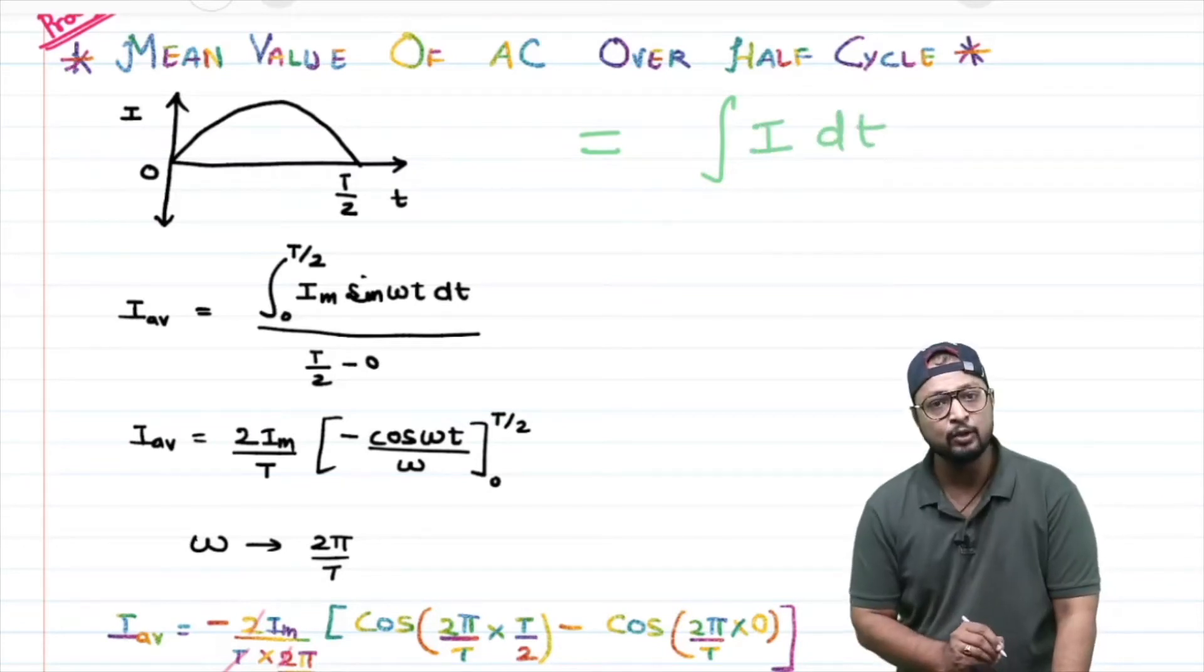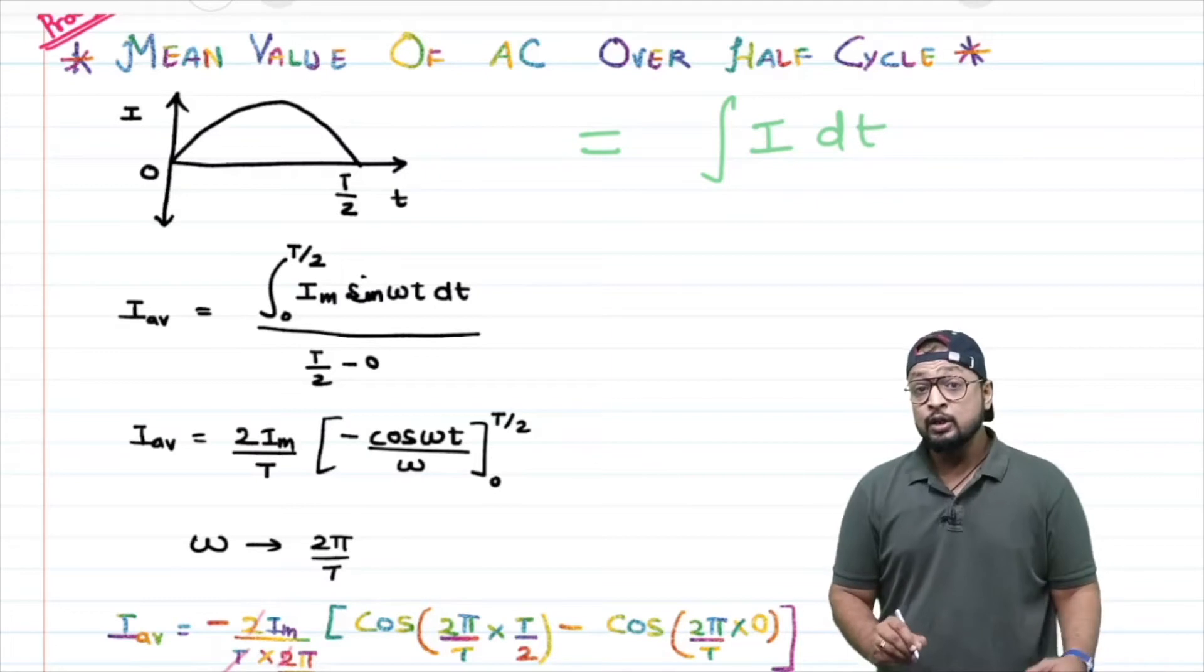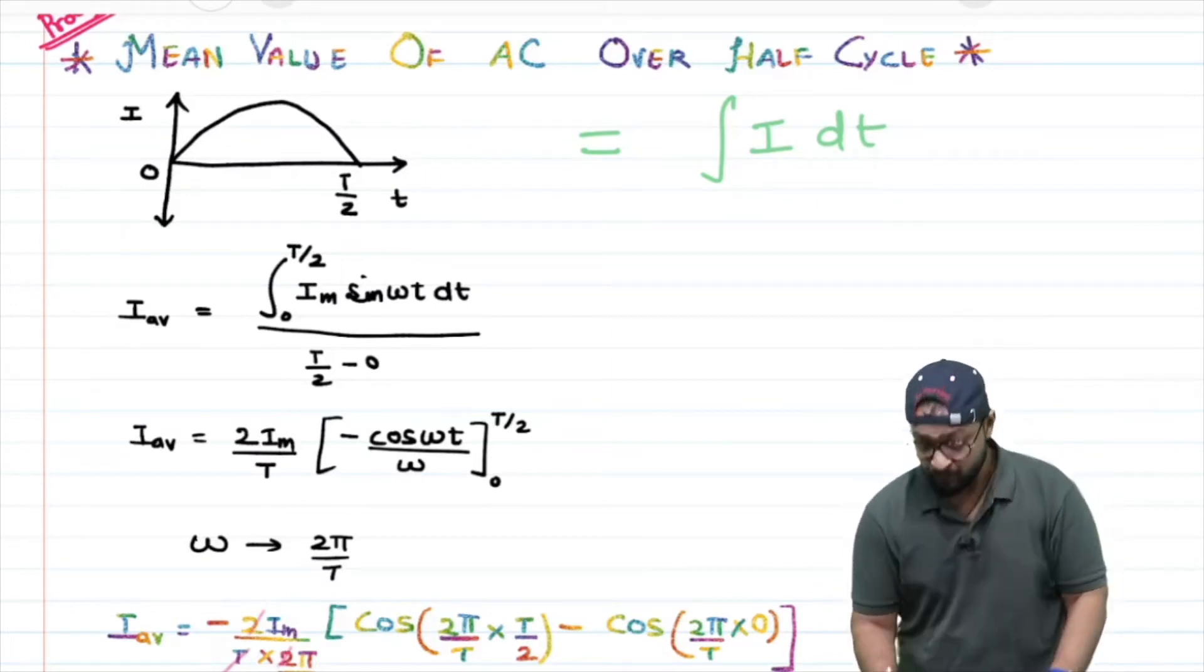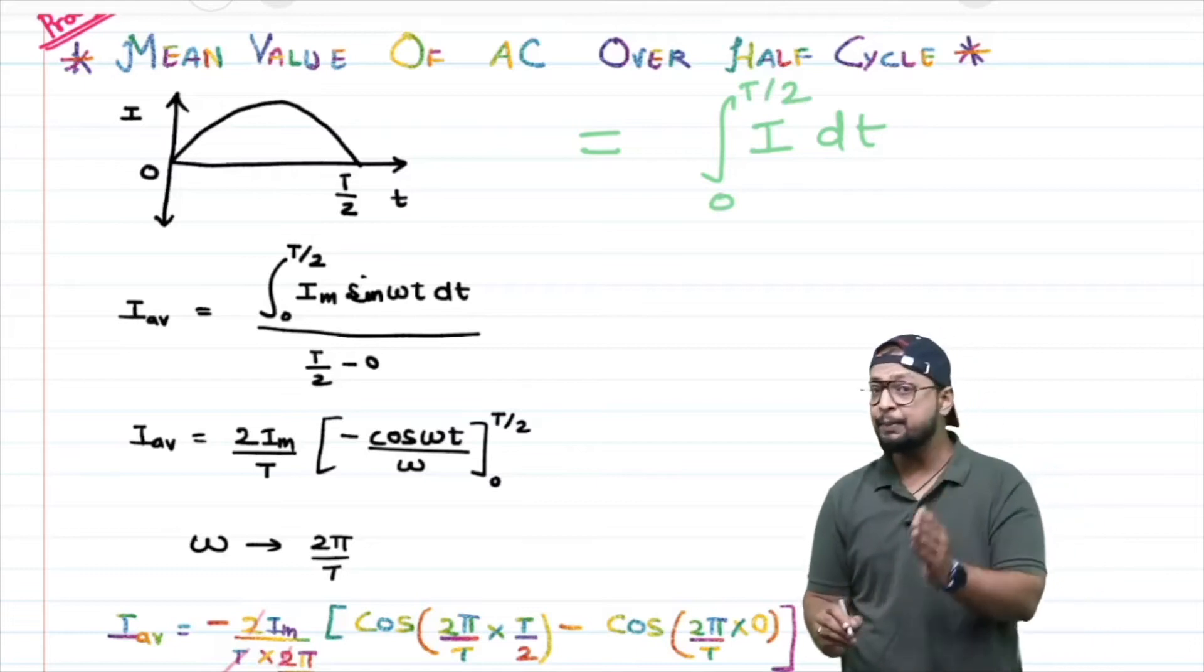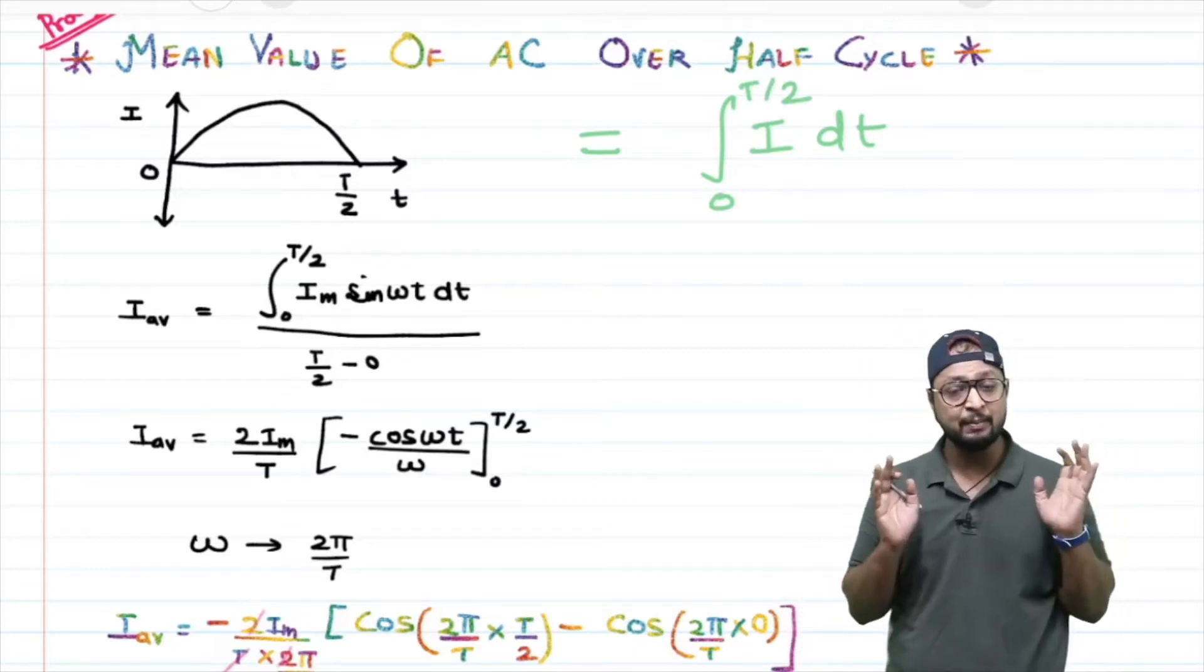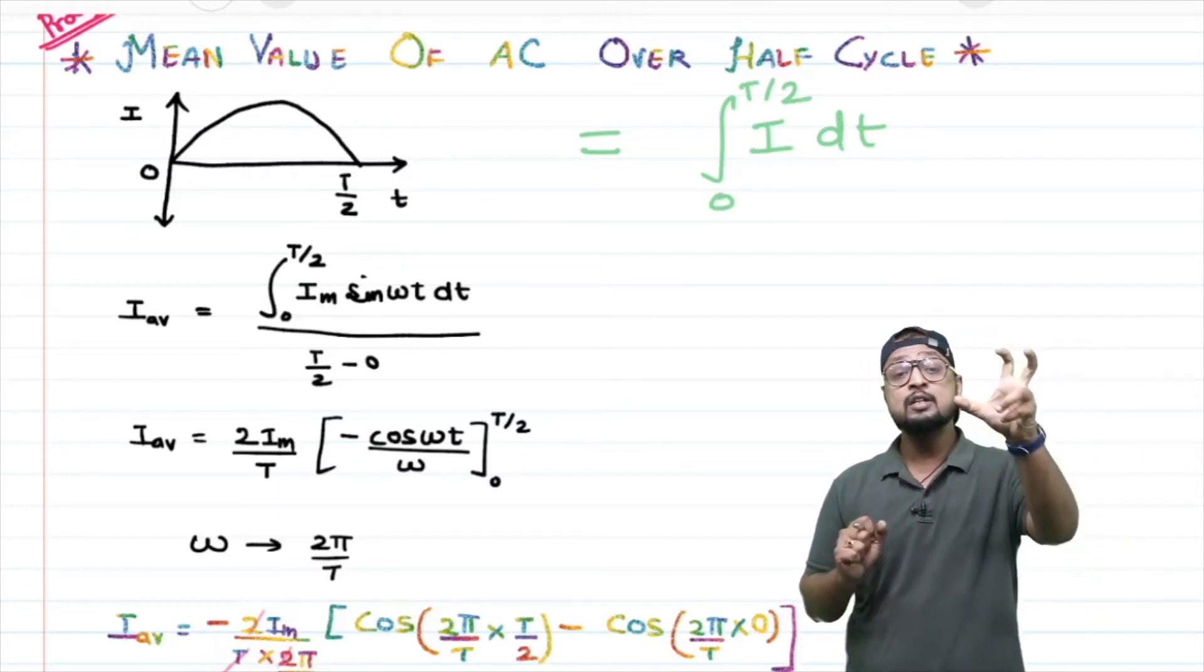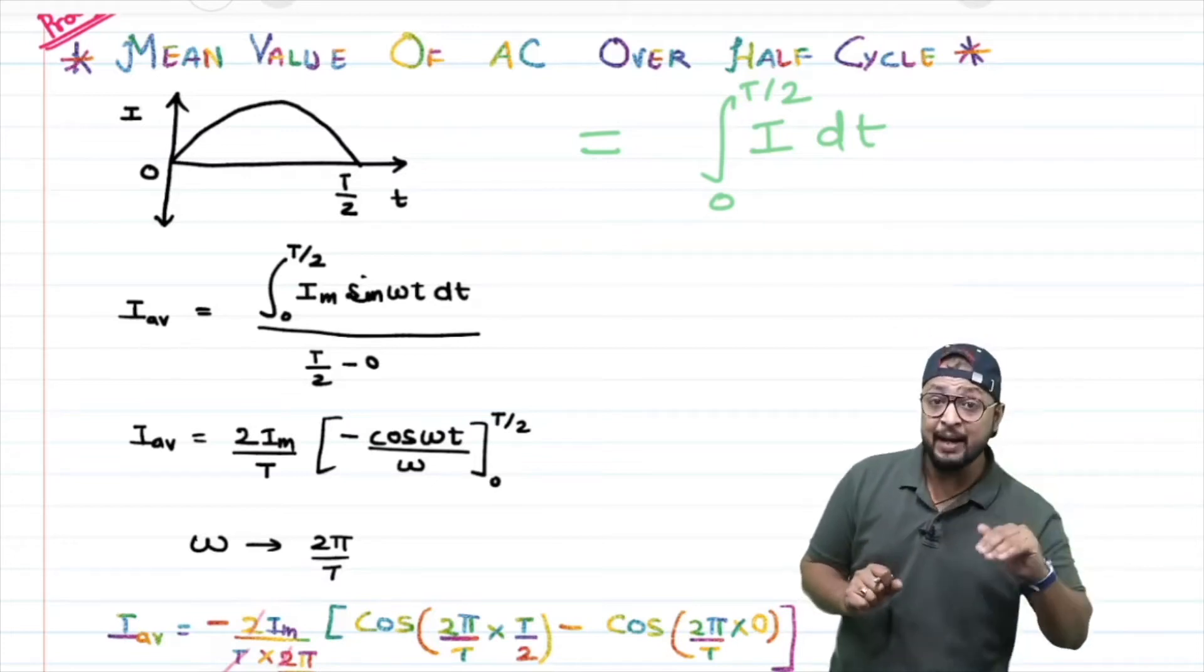dt corresponds to time, so you integrate the current. This is derived from t = 0 to t/2 because you are going to use the time period. What happens? This sum, 1 plus 2 plus 3, gets added.